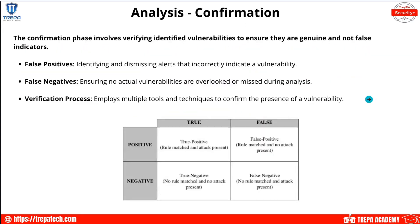Continuing with domain 4.3, we're going to go over analysis. The first thing we're going to talk about is confirmation. Let's say we get alerted that our assigned systems or IDS systems alerted us that there may be a potential exploit or a potential incident happening.